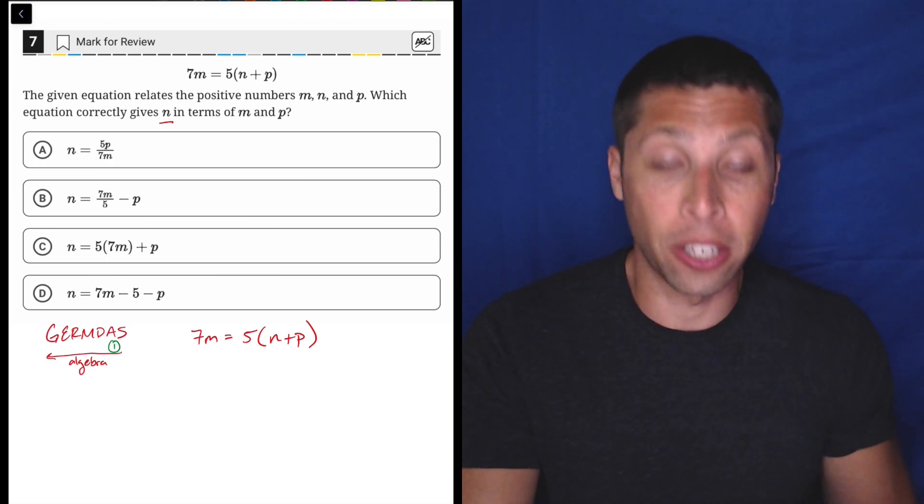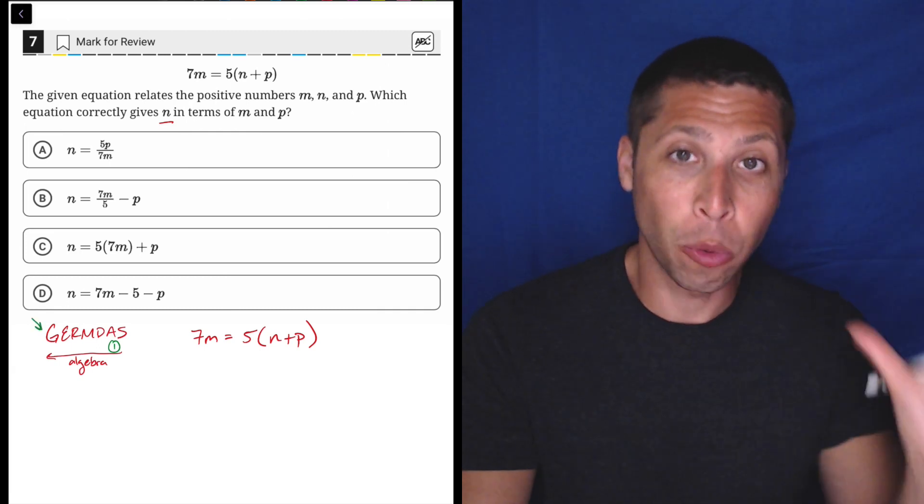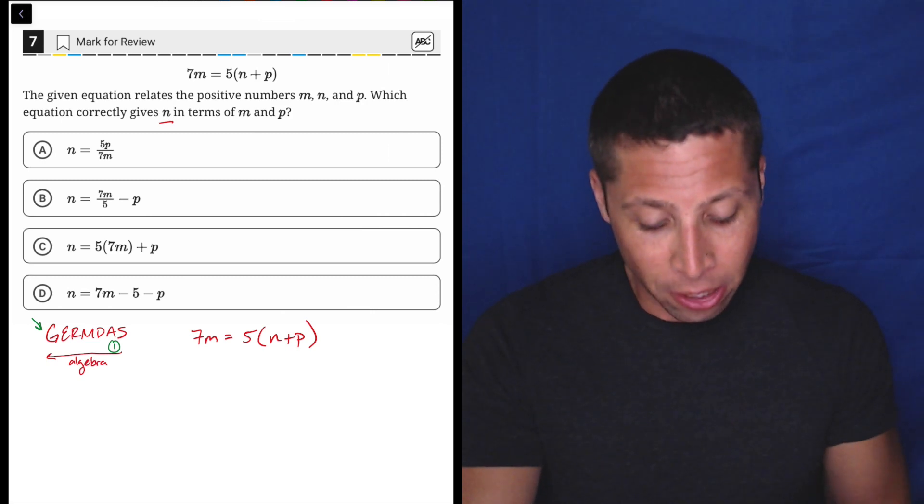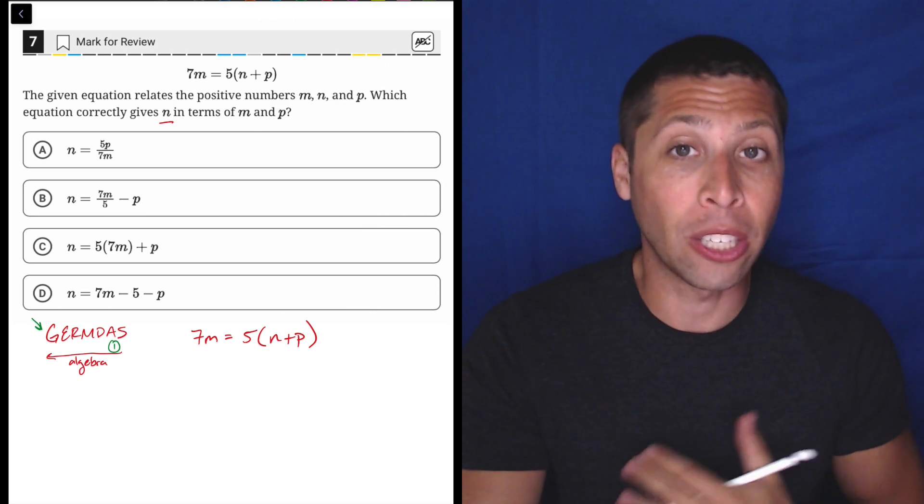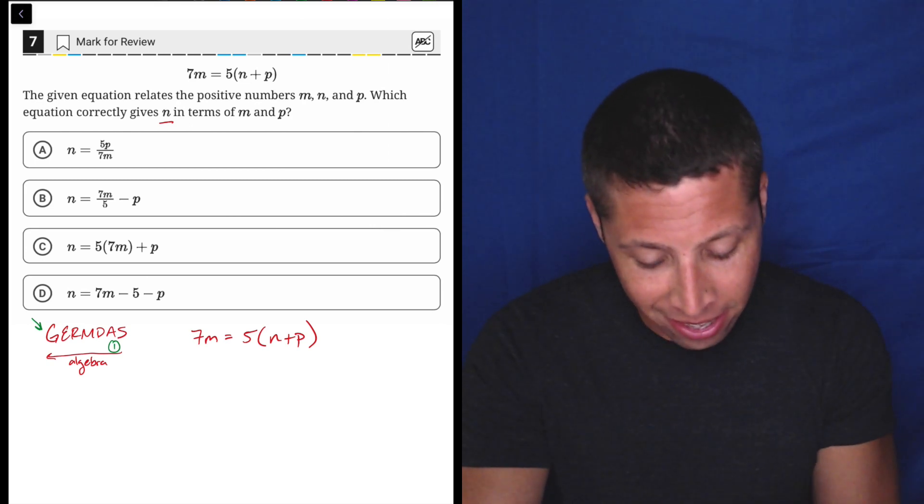So you'd think, okay, well, we've got addition here, n plus p, why not subtract the p? Well, because our last step is the G, the groupings, the parentheses, right? So we can't get into those parentheses until we've moved everything else away from it. So in this case, there's no addition or subtraction we can do to start because the addition and subtraction are locked into the parentheses.